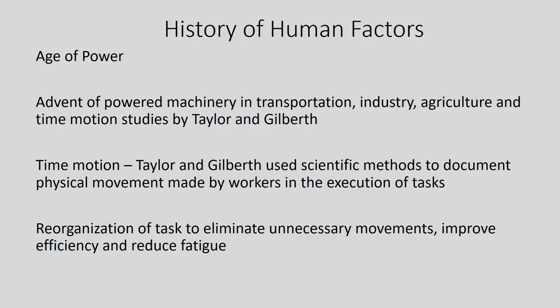By reorganization of tasks to eliminate unnecessary movements, both Taylor and Gilbert were able to improve efficiency and reduce fatigue. Why look at time and motion studies for a simple machine like the seed sower? By redesigning the machine, a number of unnecessary movements can be eliminated, saving physical energy of people and improving efficiency — how many hectares of land are sown — and reducing fatigue both on animals and the human sowing the seed. This way more work and good performance would happen with lesser effort and better designed machines.